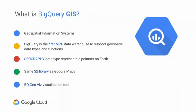So then we move on to BigQuery GIS. GIS is Geospatial Information Systems, and BigQuery is one of the first cloud providers to offer an MPP — Massively Parallel Processing Data Warehouse — that supports geospatial functions and data types.